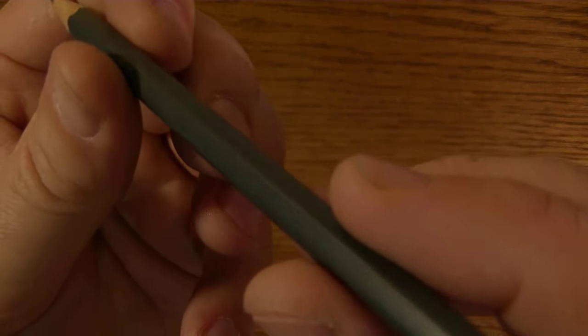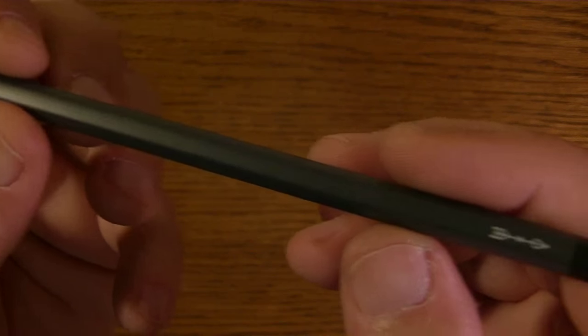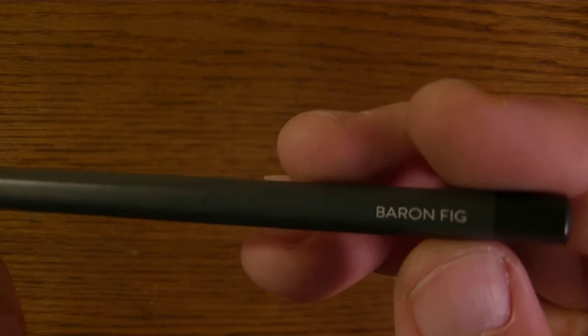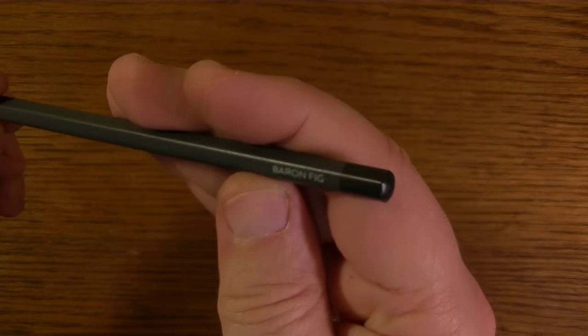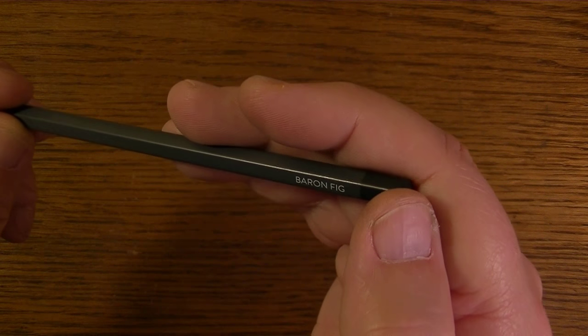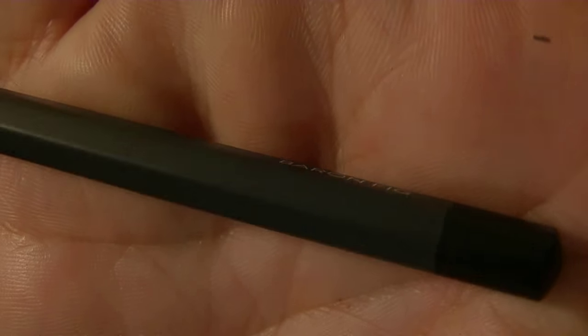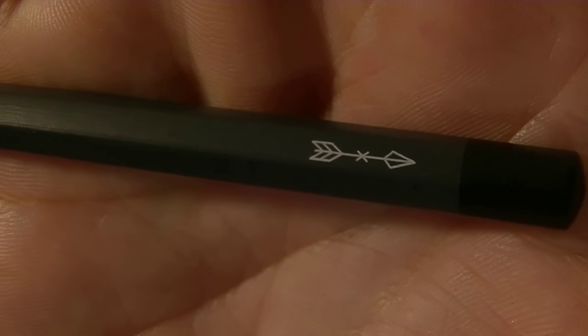It's got a very nice dark graphite paint job. Kind of a semi-gloss. You can see the reflection from the lighting that I have here. You can see that it says Baron Fig. And I would say that that's probably a white lettering on there. That looks white. And then there is the arrow, which no doubt represents the archer name.